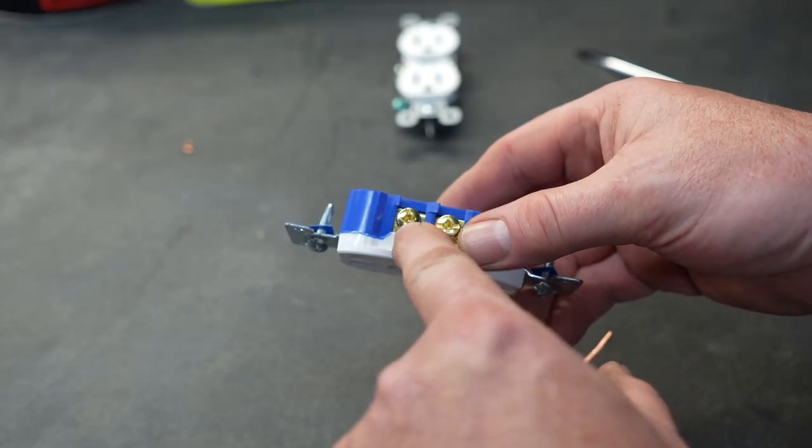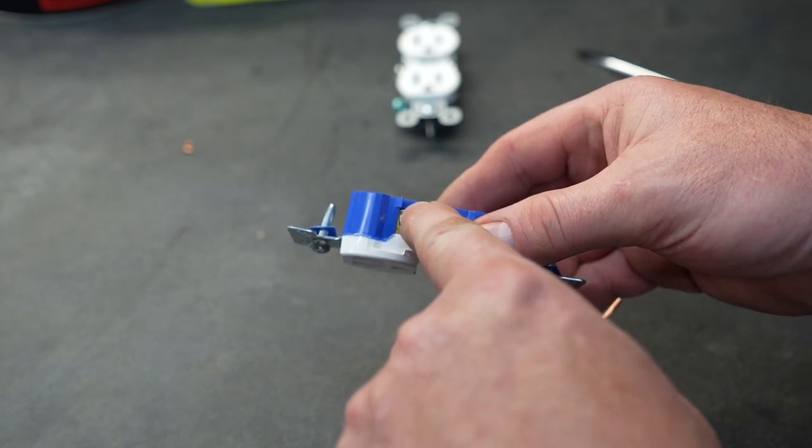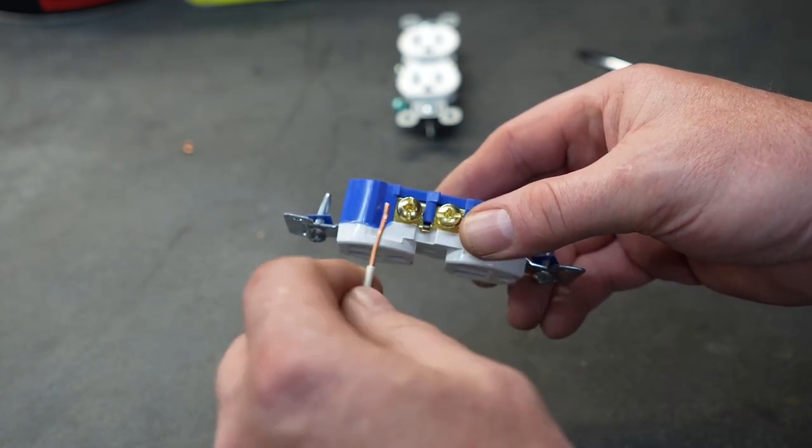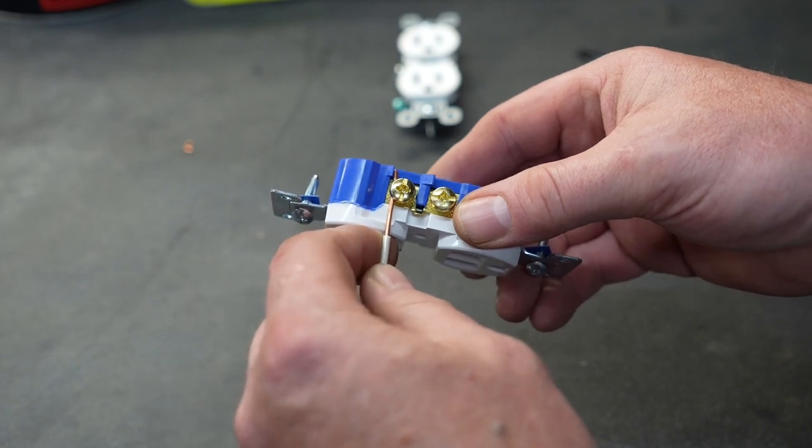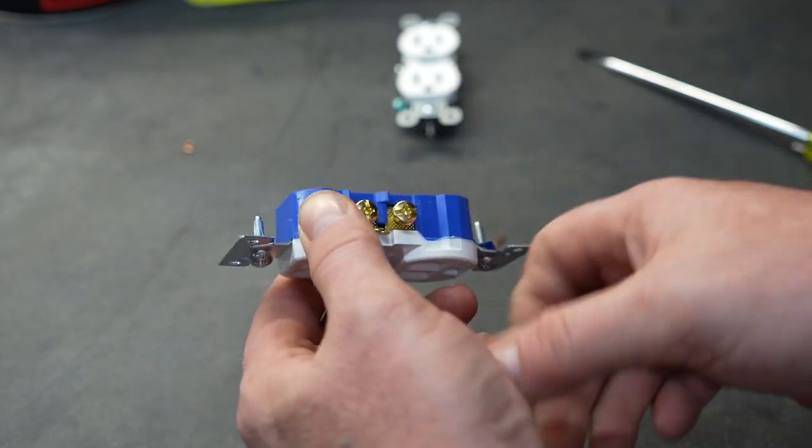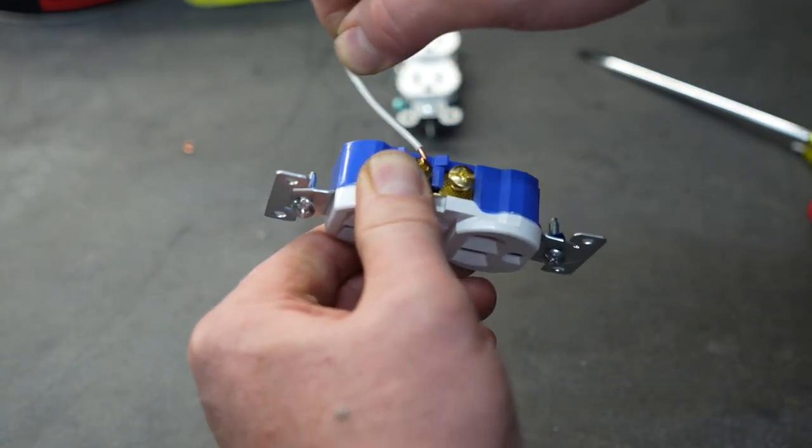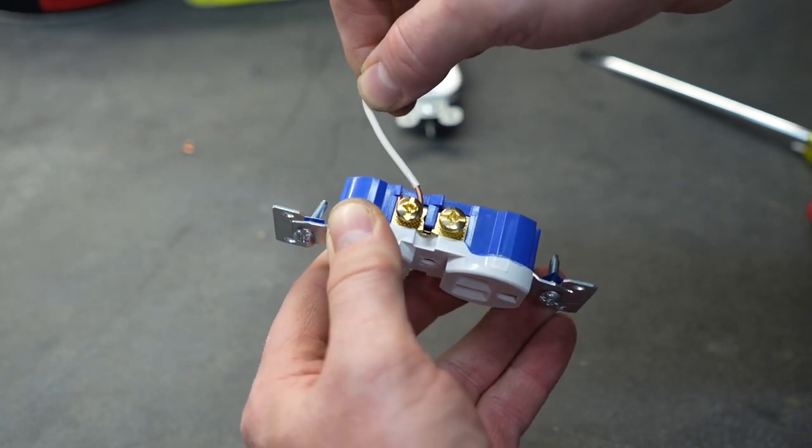And some receptacles even have a little nifty feature built into them. There's a little wire catch right here in the corner. And what that does is it allows you to take your wire, put it in place like this, and then pull it around the screw. And now you have your perfect loop and you don't need a wire bender.